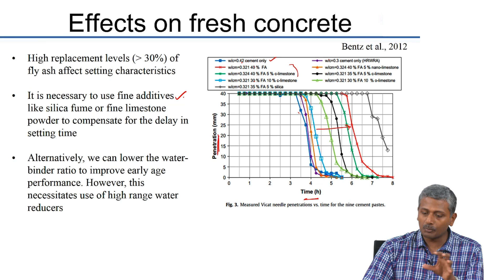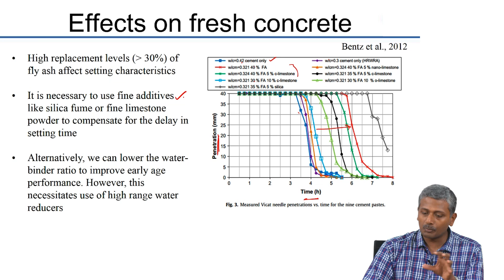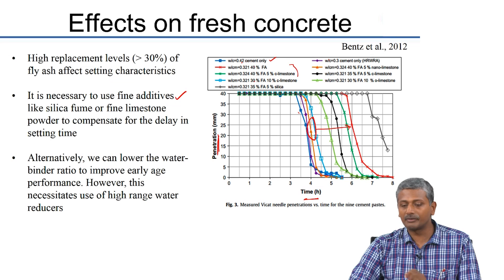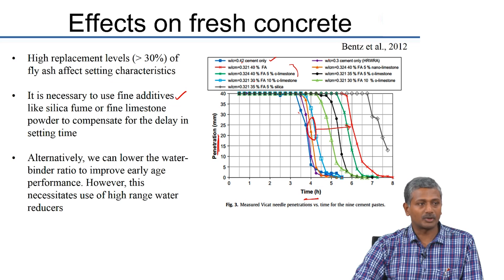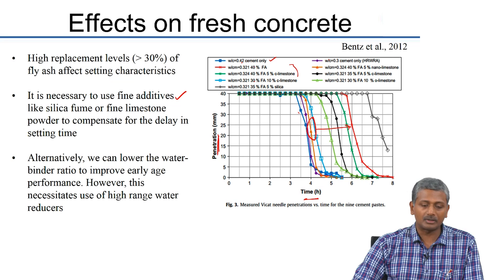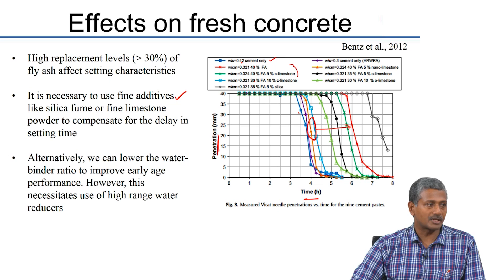The orange and blue curves show mixes with fly ash and small particles of limestone together. To compensate for the delay in setting with fly ash, fine particulate systems like silica fume or limestone can be used. Alternatively, as mentioned, we can lower the water-cement ratio to improve the early age performance when fly ash is used as a replacement for cement.